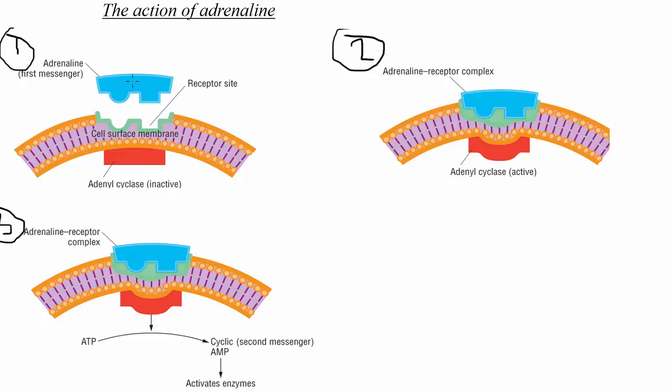Stage one we're thinking about adrenaline because it's specific to the OCR course. So adrenaline is the first messenger. That's going to fit into a receptor site on the cell's surface membrane. And you can think about this and further simplify it as just thinking about a simple lock and key. So it's only going to work in the specific receptor sites.